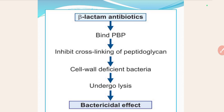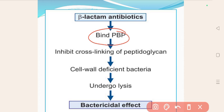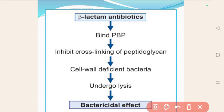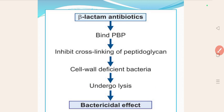The mechanism of action of all beta-lactam antibiotics is that they bind to the penicillin binding proteins, also called transpeptidase enzyme. In the case of cephalosporins, the penicillin binding proteins are different. By binding with the penicillin binding proteins, they inhibit the cross-linking of the peptidoglycan — the peptide chain and glycan chain that are cross-linked with each other. This leads to the formation of cell-wall-deficient bacteria, which undergo lysis. There is lysis of bacteria, and that is how they exert their bactericidal effect.